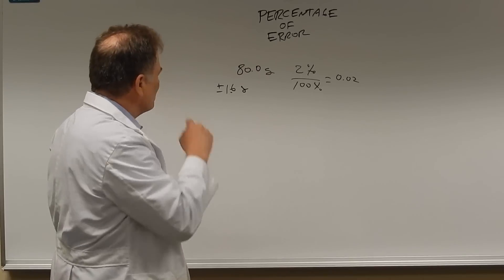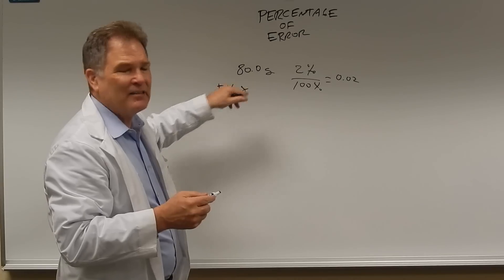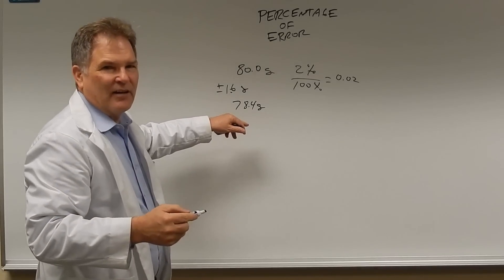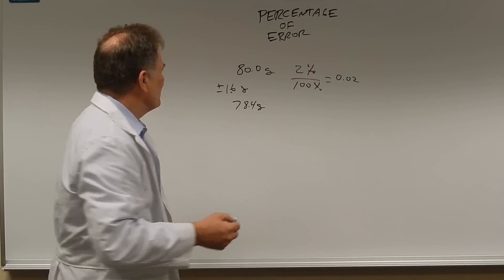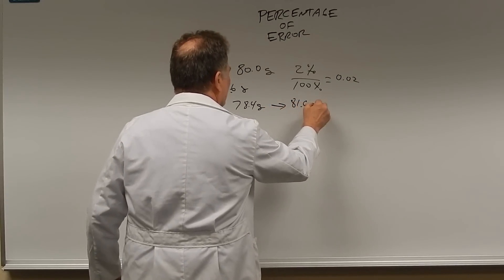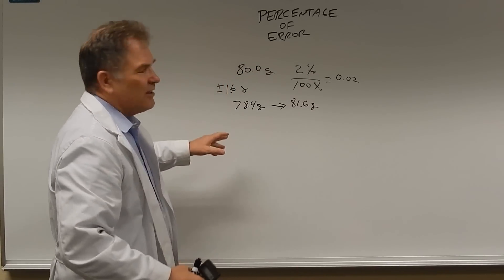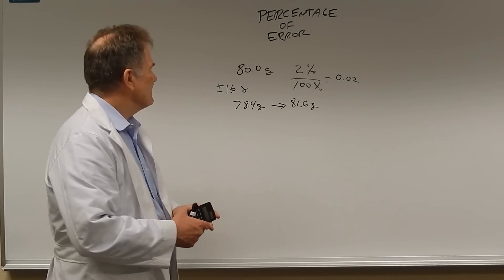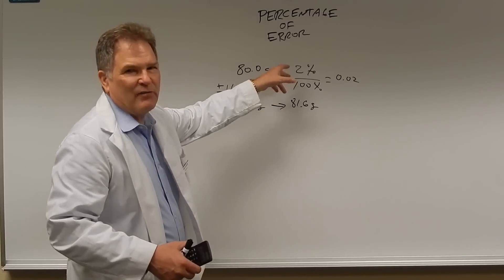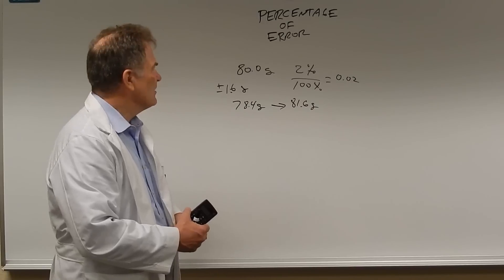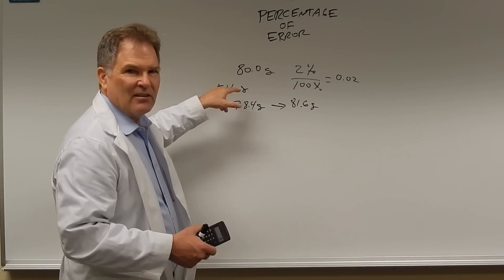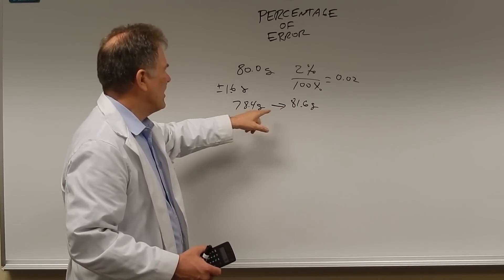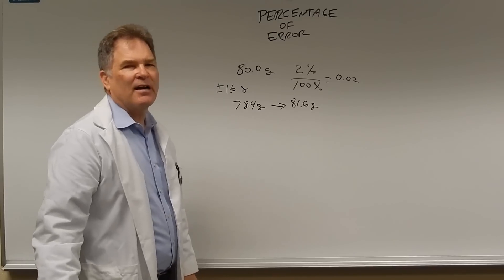On the low end, subtracting 1.6 grams from 80 gives you 78.4 grams — the least amount you can have. If you're over by 1.6 grams, you'd have 81.6 grams. So the range your actual measurement can be is from 78.4 grams up to 81.6 grams. This time we're given a percentage of error and have to figure out how many grams that is, then subtract and add that from your desired amount to get a range. Anywhere between 78.4 and 81.6 grams is within that 2 percent margin of error.